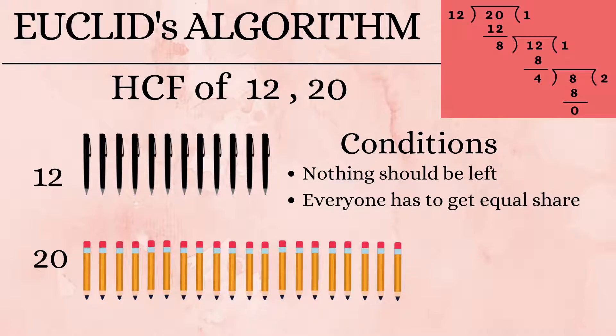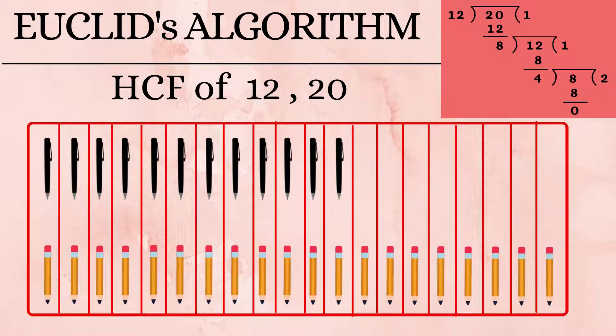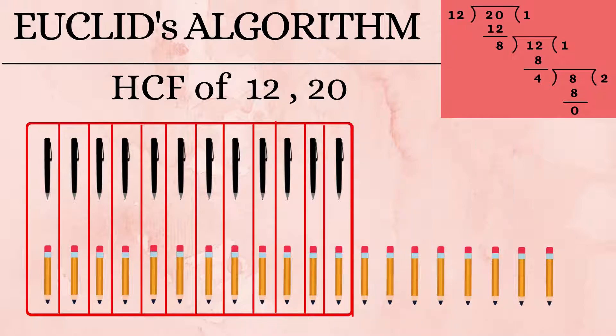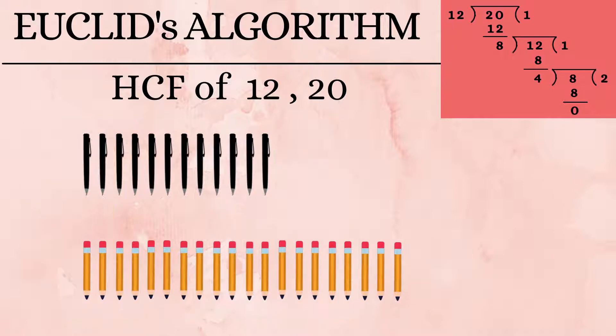But Anne is very lazy. You know what she does? She says, I'll just give it to 20 of my friends. But then everyone wouldn't get an equal share because there are only 12 pens. Now she puts them back together.